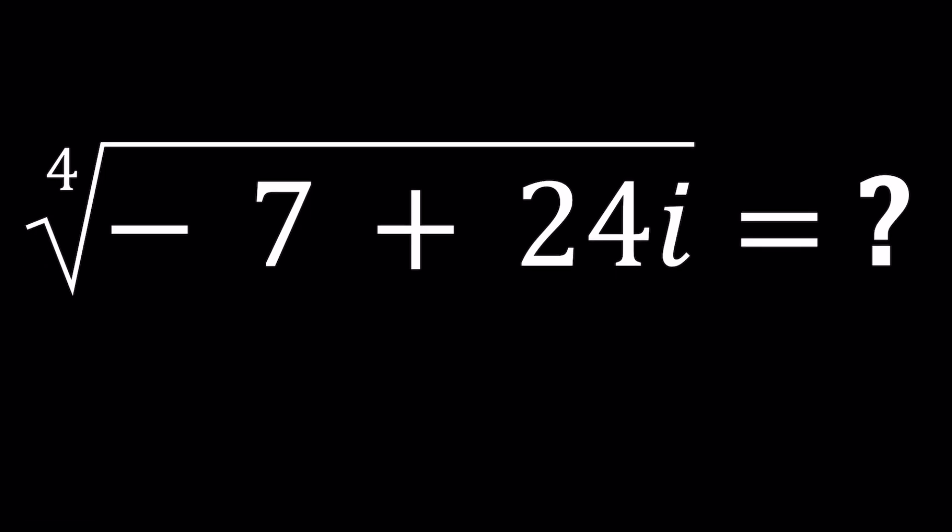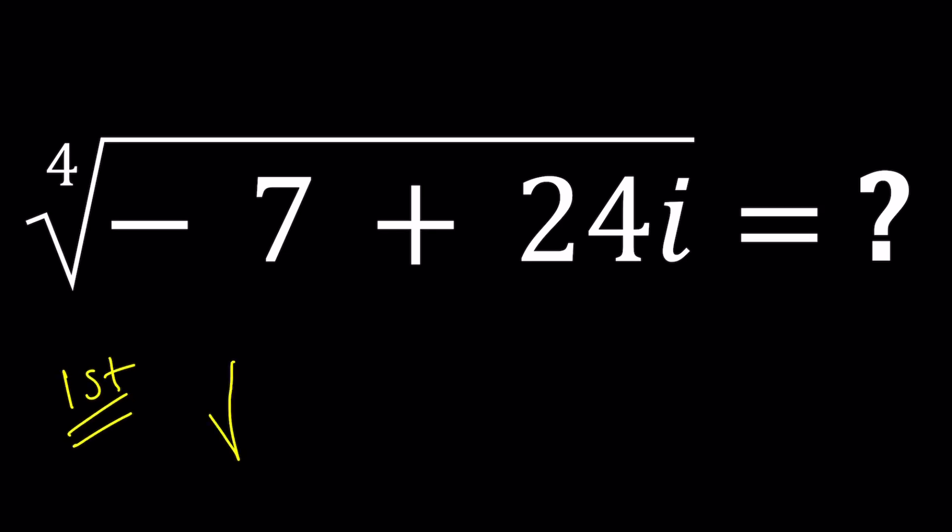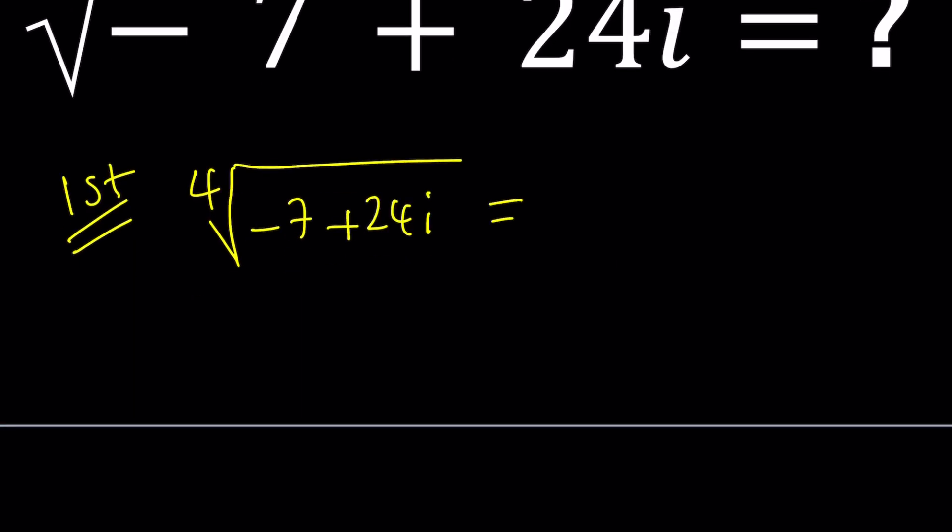I'll be presenting at least two methods and my first method is going to depend on finding the fourth root directly. What I mean by that, it'll become more clear as we proceed. But here's what I want to do. I want to set this equal to a number, a complex number.